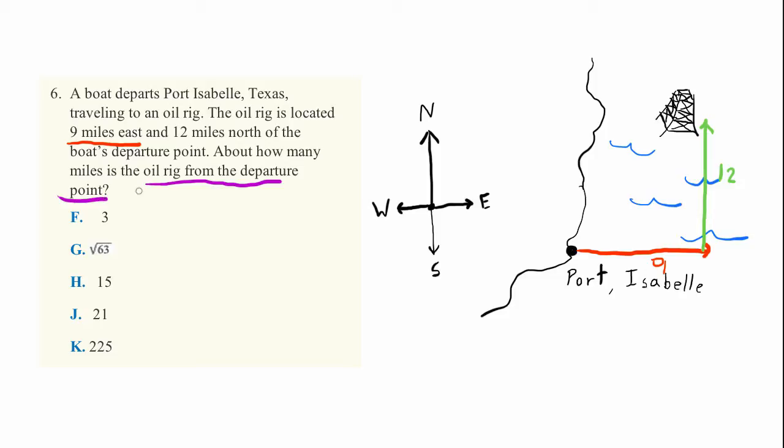So what they're asking is if instead of going straight east and then straight north we went in a straight line to the oil rig, what is this distance right here?